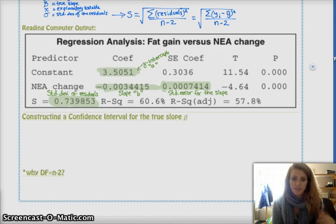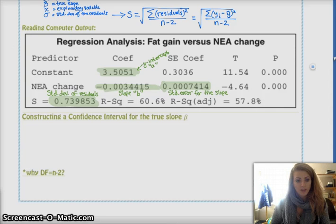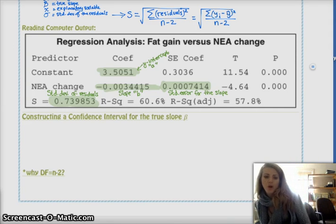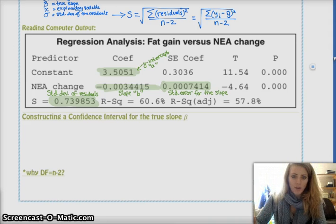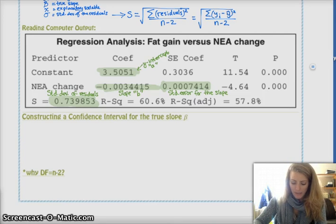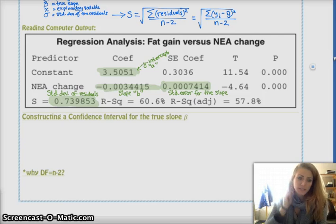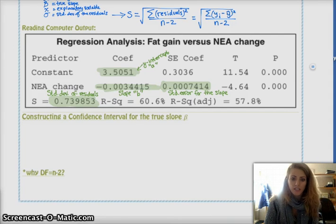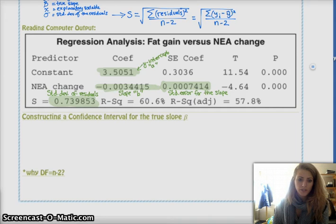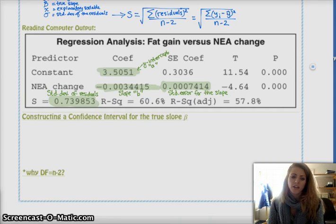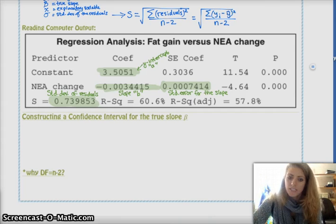So, let's actually construct a confidence interval for the true slope. You're going to have to check your conditions for linear regression analysis for the inference. However, we're going to do that in the example. But constructing the confidence interval for the true slope, B, it's always your statistic plus or minus your critical value times the standard deviation of the statistic.